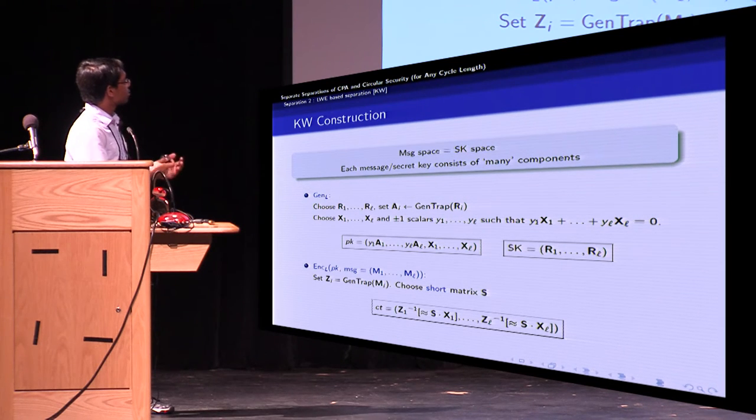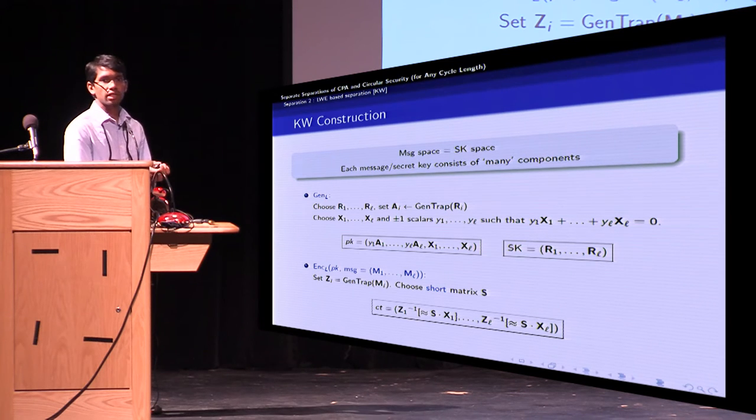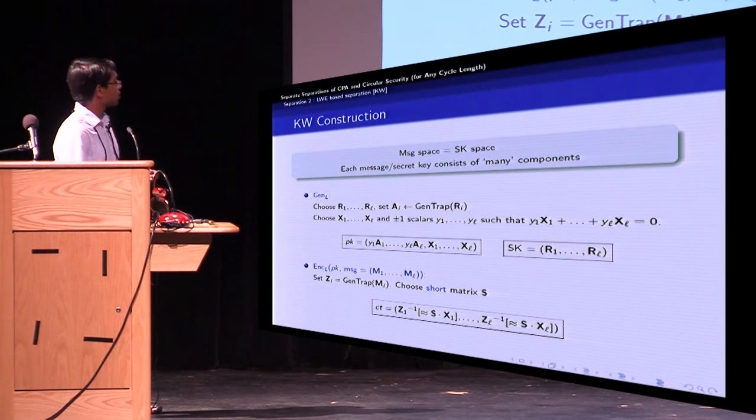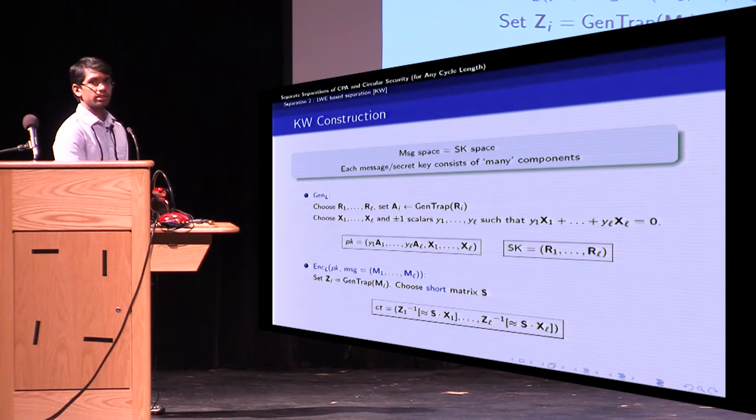And the leader encryption algorithm is also, as we've seen, will use the message components as randomness for GenTrap, compute Z_i matrices, choose a short matrix, and the ciphertext consists of Z_i inverse of an approximation of S times X_i.